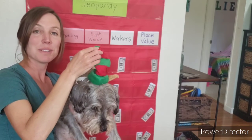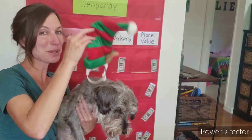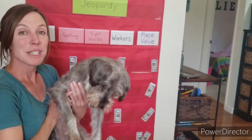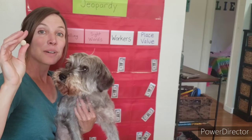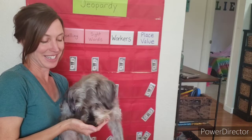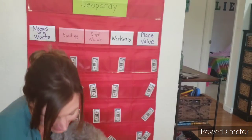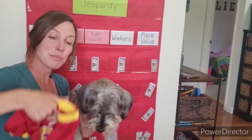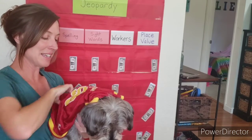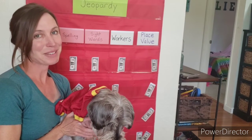Do you think that the elf hat is something that Zeus needs or that he wants? Dogs don't really need a hat, so this would be a want. The next one is a little piece of his doggy kibble — is it important to have food? Yes, this is a need! Zeus agrees — he says, 'Oh yes, I need that!' The next one is a basketball jersey that we sometimes put on Zeus. Does Zeus need to wear a basketball jersey? That's a want.